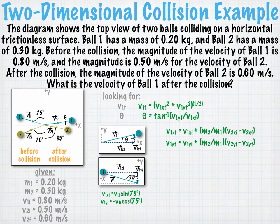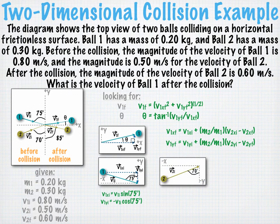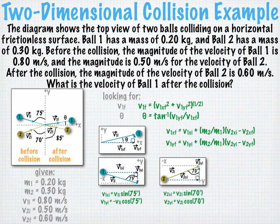Now let's look at v2 initial. We draw the x and y components of the vector. We see that v2x initial equals v2 initial times the sine of 70 degrees, and v2y initial equals v2 initial times the cosine of 70 degrees. Both of these vector components have positive values because they're both pointing in the positive directions.